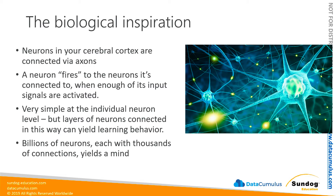These are individual nerve cells, and they're connected to each other via axons and dendrites. You can think of these as connections — wires, if you will — that connect different neurons together. An individual neuron will fire or send a signal to all of the neurons that it's connected to when enough of its input signals are activated. At the individual neuron level, it's a very simple mechanism: you have a neuron with a bunch of input signals coming into it, and if enough of those input signals reach a certain threshold, it will fire off signals to the neurons it's connected to as well.